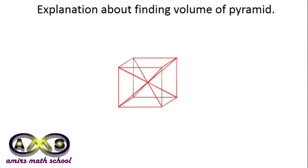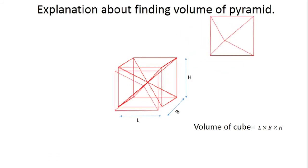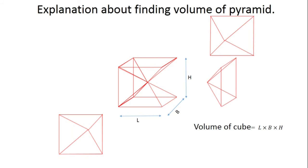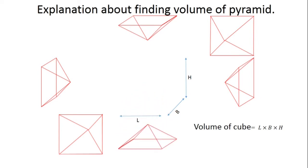To explain how to find the volume of a pyramid, we start with a cube of length l, breadth b, and height s. For a cube, length, breadth, and height are equal, so the volume of the cube equals length × breadth × height. If we cut this cube along the diagonal lines, we get six equal pieces, and the meeting point is at half the height of the cube. This gives us six equal pyramids.